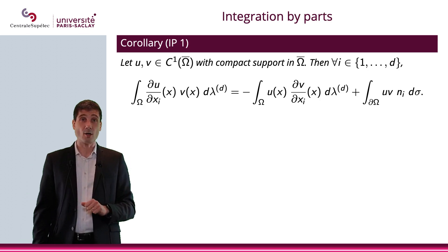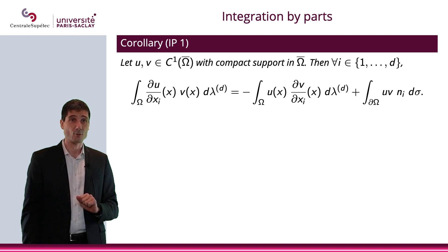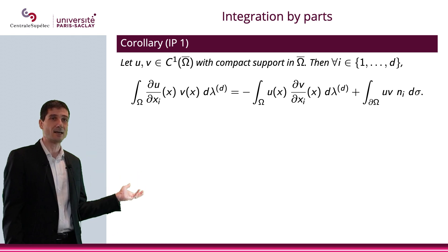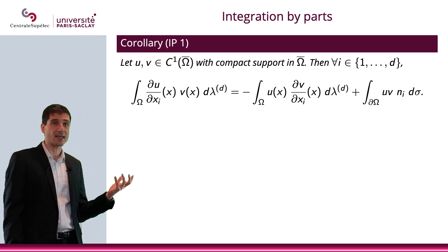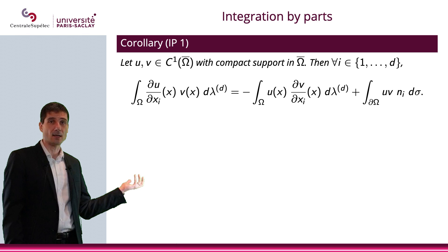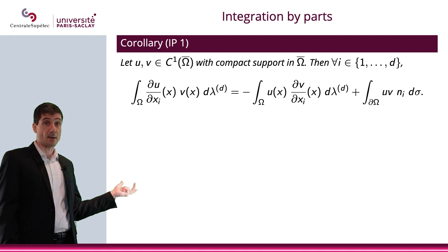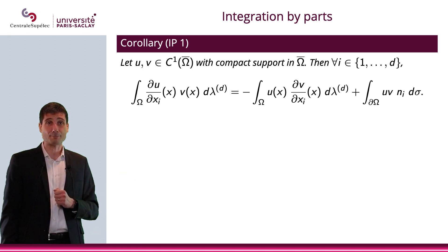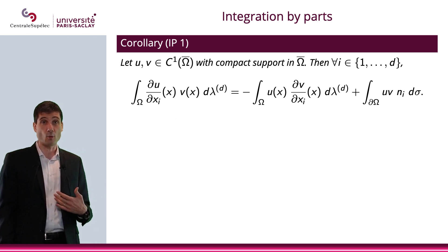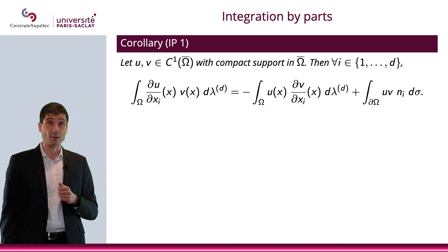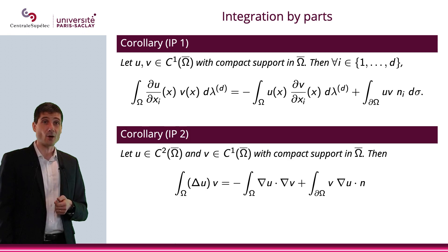Okay, now, let me give a few corollaries, two corollaries, that will be for the integration by part. That will be IP1 and IP2. IP1 says that basically, the integral over Ω of ∂u/∂x_i v(x) dλ^d, and then the λ^d, as a reminder, is the Lebesgue measure of dimension d. And that would be minus the integral over Ω of u(x) ∂v/∂x_i with this same measure, plus the integral over the boundary of u v n_i.